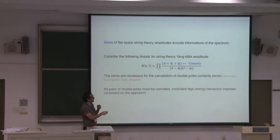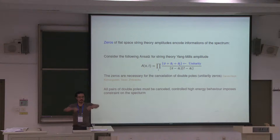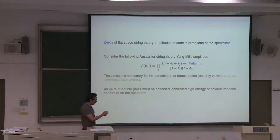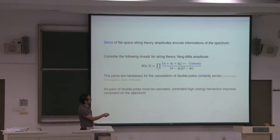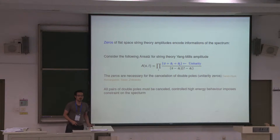When you're sitting on a singularity, that means you're already factorizing into two three-points; there can be no new singularity if the theory is local. So you want to kill the double poles. String theory's proposed solution is to place all the double poles as explicit zeros in the numerator — a manifest zero. So when s equals a_i and t equals a_j, there's a factor (u + a_i + a_j) in the numerator which cancels the double pole.